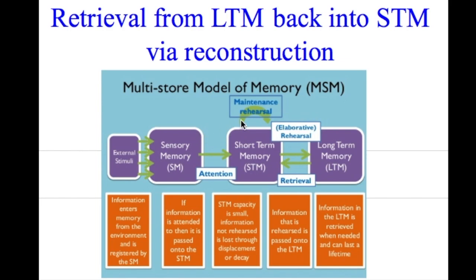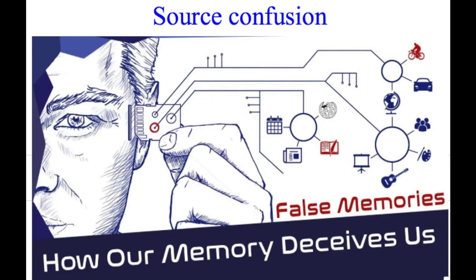So the material that actually gets actively processed in STM is really determined by our attention, and given the limitations of our STM, that's going to limit the amount of material that can actually be encoded as the original source in LTM. Later on, when we need to retrieve that information, we need to reconstruct it back into STM. What our brain does during this reconstructive process is it accesses material from the original and accurate source stored in LTM and pulls that material back into STM.